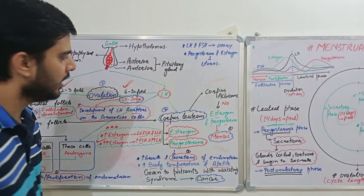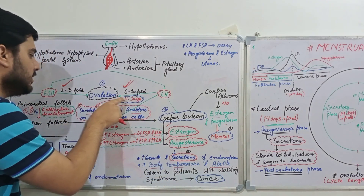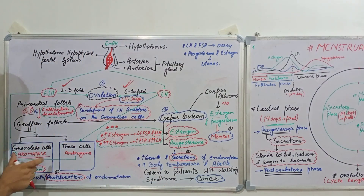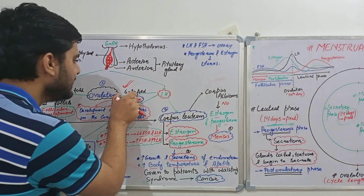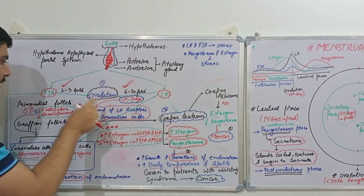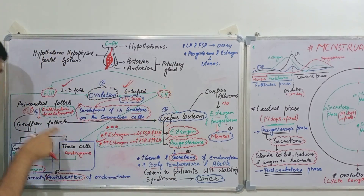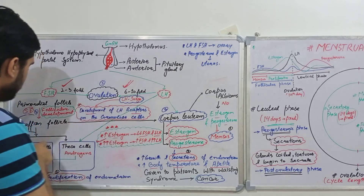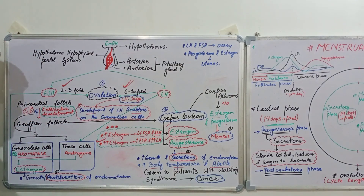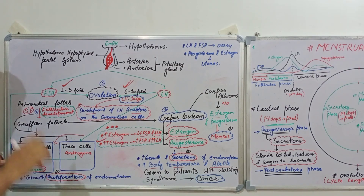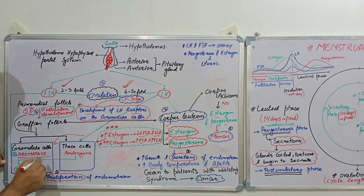After ovulation, the LH surge develops LH receptors on the granulosa cells. Until now, granulosa cells had surface receptors only for FSH. But after the LH surge, LH receptors also develop on the granulosa cells. So now there are LH receptors on both theca cells and granulosa cells. This helps in the synthesis of progesterone from the granulosa cells — LH acts on granulosa cells to convert androgens into progesterone. So after the LH surge, we have both estrogen and progesterone.